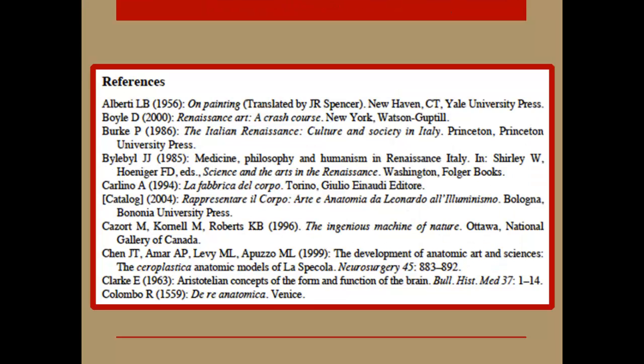At the end of a scholarly article, you will find a list of the works cited by the authors. This list is called a reference list, works cited, or bibliography. In scholarly articles, this list will generally be quite long and include articles, books, and other resources. When you look at the references, take a look at the dates of the articles and books listed — are they recent? Does the list include a good mix of both current and older articles?